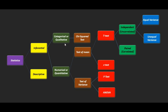For categorical type of data we apply the chi-squared test, and for numerical type of data we apply multiple tests like t-test, z-test, f-test, and ANOVA. In numerical data we test for mean and variance. For testing on mean we do t-test or z-test, and for testing on variance we do f-test and ANOVA.